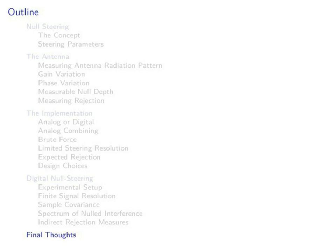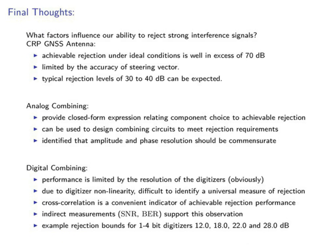To wrap up: you should be able to do very well with two elements — rejecting a signal quite a great deal, 40 to 60 dB, if done right. The implementation of your null steering is the limiting factor. For analog null steering, it's down to how well you can steer phase and gain — choose steering circuitry to be commensurate; there's no point in wasting effort on phase steering if you don't have good gain control. For digital combining, it's obviously down to the digitizer — typically four, five, or six bits or more to get near 20 to 30 dB of rejection. Back to you, Alan.